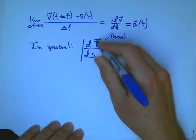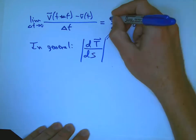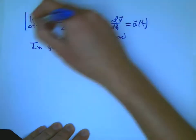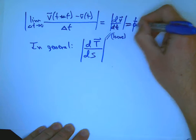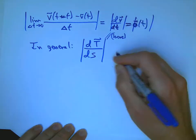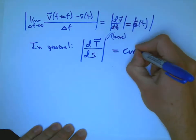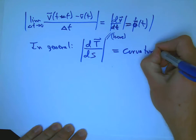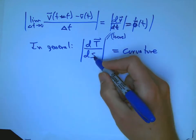And so what we're going to do is we're going to take the magnitude of that guy. It's actually interesting to look at the vector itself, but we'll do that next. And so we're just going to take the magnitude of all these guys. And we're going to define that to be the curvature of the curve.